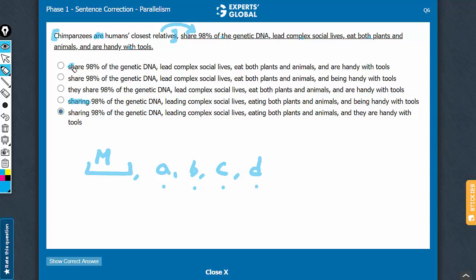You have are here. If it said share, the two would become parallel. So that's one reason. Answer choices which are parallel here to chimpanzees are, are not going to be correct. So a, b, and c have one reason for being eliminated.